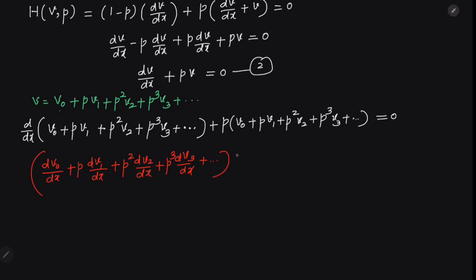Adding the second group of terms — p·v0 + p²·v1 + p³·v2 + ... — and setting the whole expression equal to zero gives us our expanded differential equation.